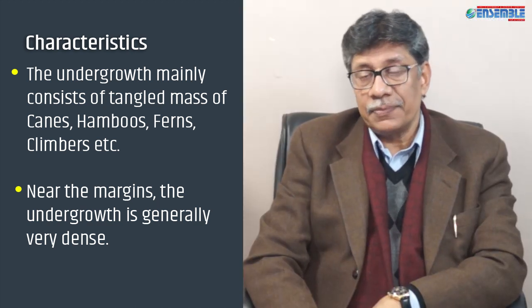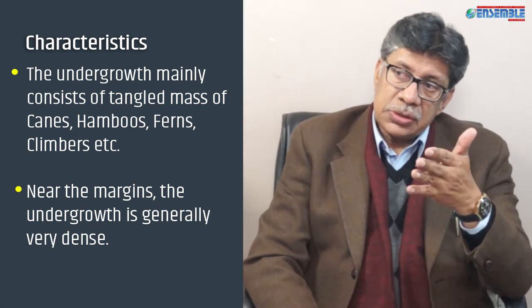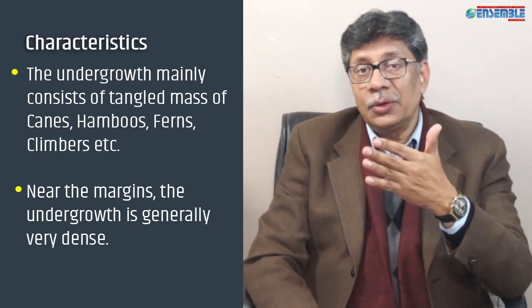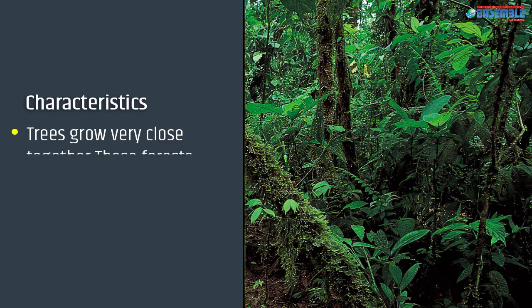Near the margins of water bodies, the undergrowth is generally very dense. Under normal conditions, undergrowth is not present because light hardly reaches the surface. But near water bodies, where there cannot be a forest cover and sunlight can actually enter, the undergrowth becomes very dense, and a variety of orchids flourish on the trees.